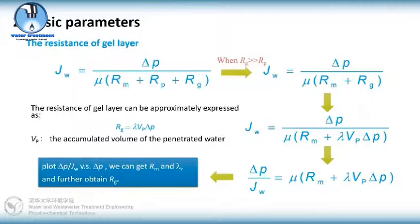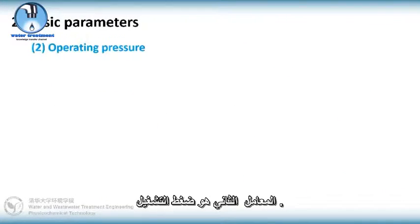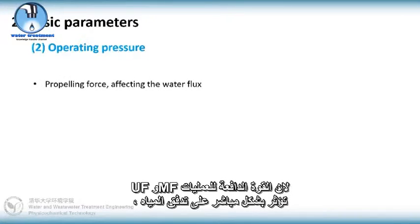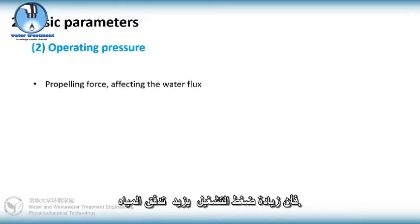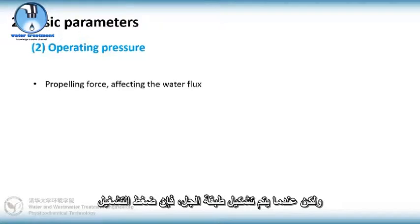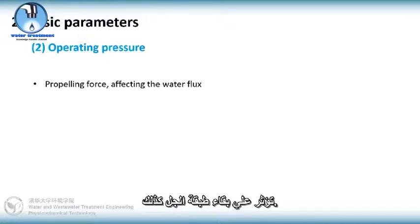The second parameter is operating pressure. As the driving force of UF and MF processes, it directly affects the water flux. Increasing operating pressure would increase the water flux, but when gel layer is formed, the operating pressure would affect the resistance of gel layer as well.